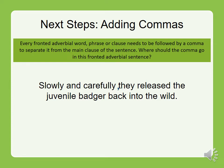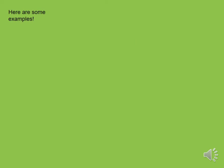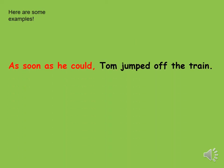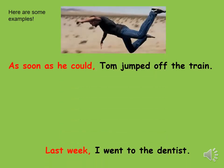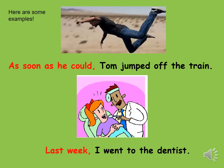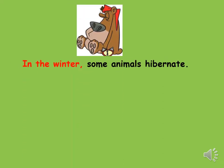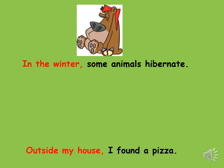Well done — the comma needs to go after slowly and carefully. Here are some examples: As soon as he could, Tom jumped off the train. Last week, I went to the dentist. Fronted adverbial, followed by a comma, and then the main clause. In winter, some animals hibernate — this describes time. Outside my house, I found a pizza. So what does this describe — when, where, how, possibility, or manner? Well done, this describes where, because it's outside my house.